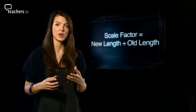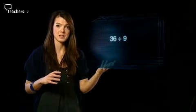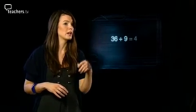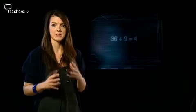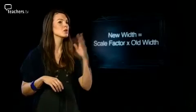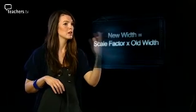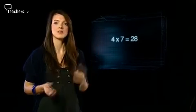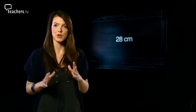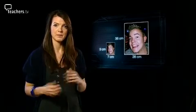Our original photo was nine centimetres high and we want to make it 36 centimetres high. So 36 divided by nine gives us four — our scale factor is four. Now, to keep the photo in proportion so Dave doesn't have a skinny or fat face, we multiply the width by the same scale factor. So four times seven gives us 28 — our new photo will be 28 centimetres wide.